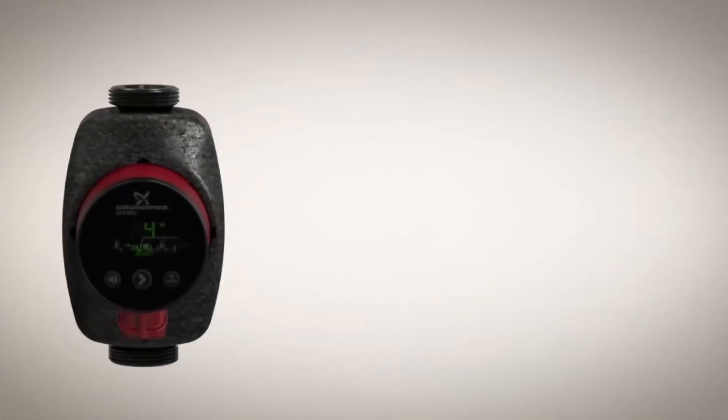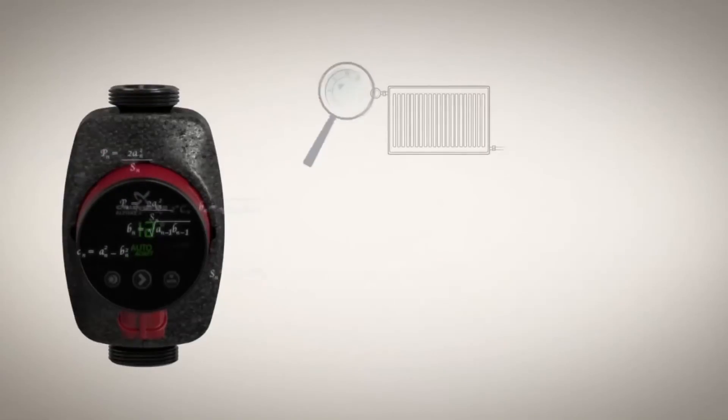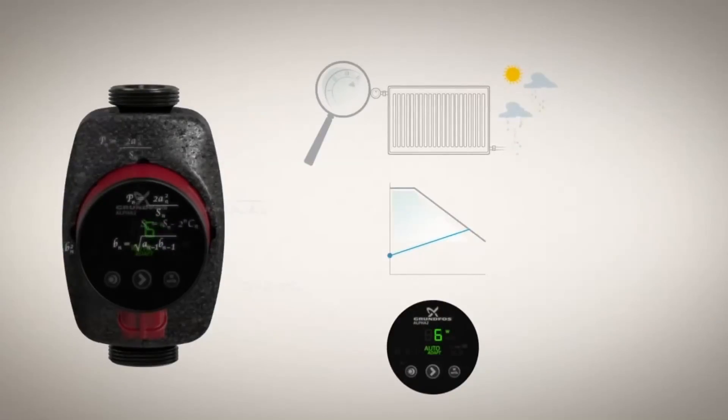Using sophisticated software algorithms, auto-adapt continuously analyzes the heating system it's part of, and determines whether the pump's differential pressure level matches current needs, selects the best proportional pressure curve for the pump, and controls the pump's output.